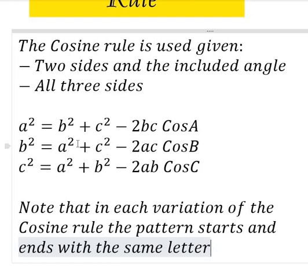How will you know when to use the cosine rule? Two sides and the included angle will be given, or all three sides will be given. The sides are a, b, and c of the triangle, and the corresponding angles are A, B, and C. Whenever these conditions are met, you will make use of the cosine rule for that problem.